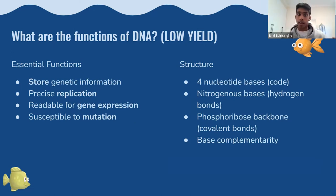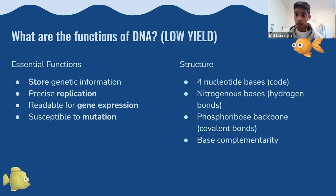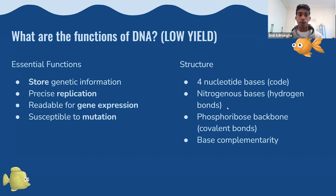There are four essential functions of DNA: storing genetic information, precise replication, being readable for gene expression, and being susceptible to mutation. The nucleotide bases allow DNA to store genetic information. The nitrogenous bases have hydrogen bonds that allow DNA to be replicated, because these hydrogen bonds can be readily broken and reformed. The phosphoribose backbone allows for a very strong and reliable storage method, and you have base complementarity.